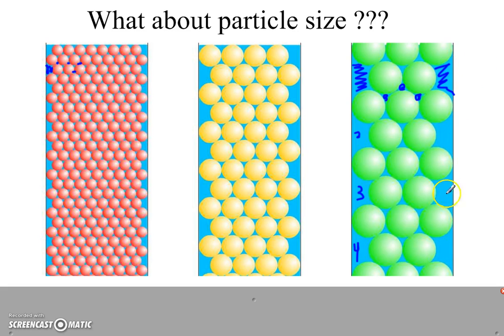But if I count the pores, I have 1, 2, 3, 4, 5, 6, 7, 8. So I have 8 pores on the sides. If I look at the small one, I have 1, 2, 3, 4, 5, 6, 7, 8, 9, 10, 11, 12, plus 12 more here. So I have 24.